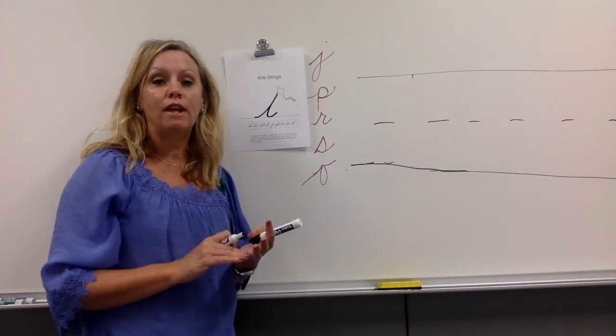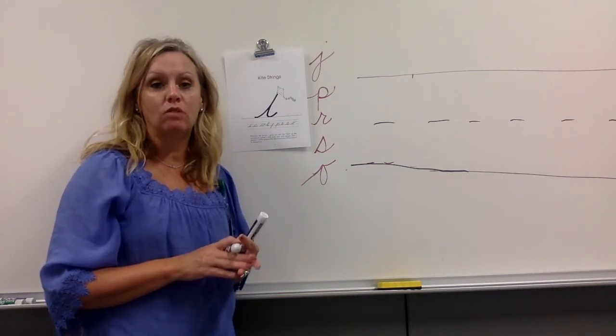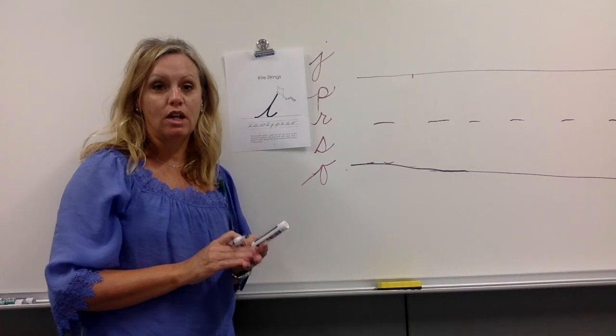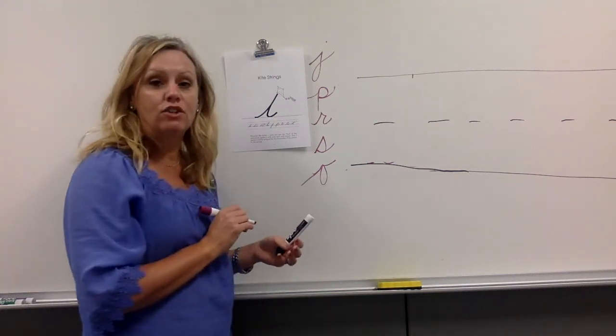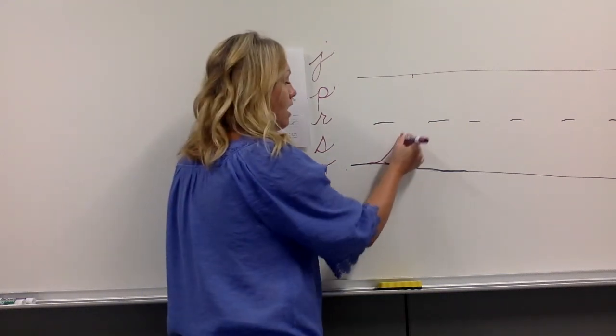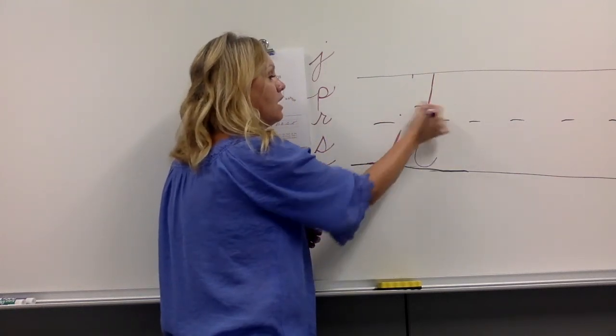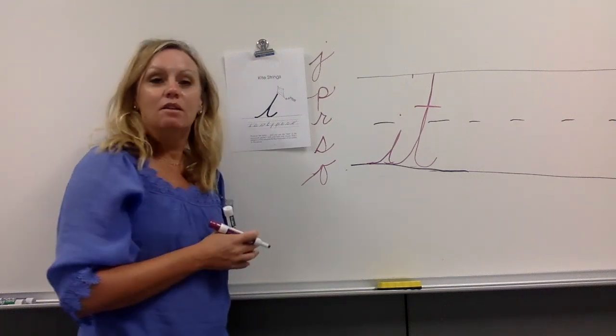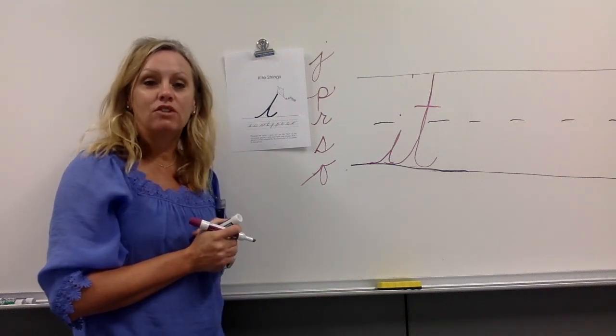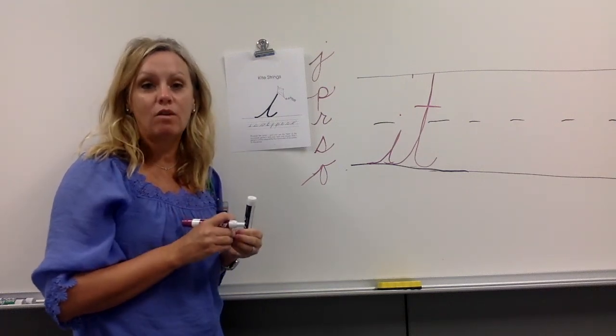The rules are when we're writing our words, when do we pick up our pencil? When we're done with the word. So in our kite string group, the word it, I-T. I'm going to finish it, then lift, dot, and cross. Practice your words, practice your letters, your connections, and where they go on the line.